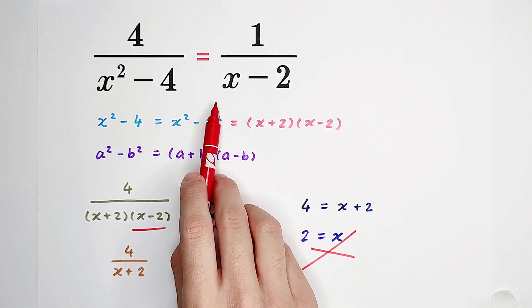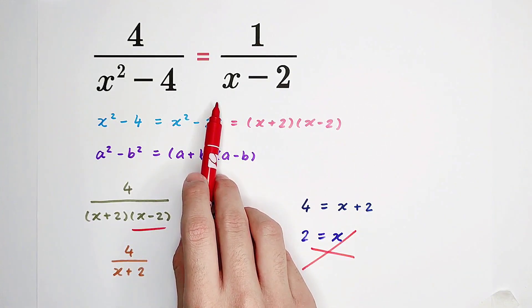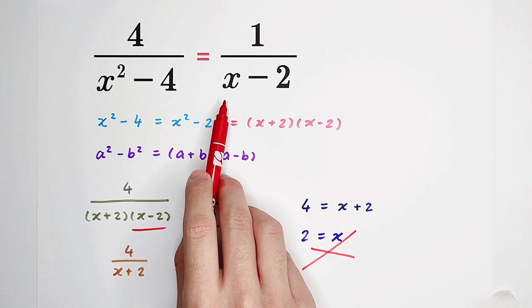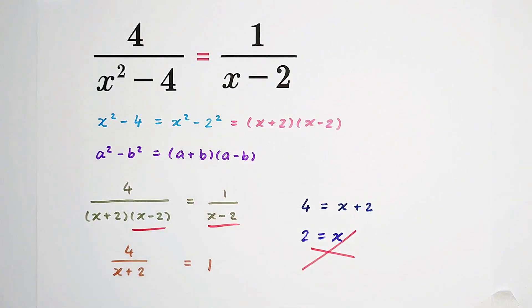You can find out that x minus 2 equals 0 is the denominator. However, 0 can never be the denominator, so where is the problem?